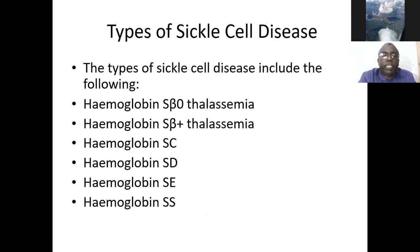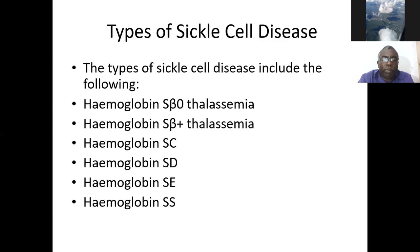The types of sickle cell disease include: hemoglobin S beta-zero thalassemia, hemoglobin S beta-plus thalassemia, hemoglobin SD, hemoglobin SE, and hemoglobin SS. Out of all of these, hemoglobin SS is the most serious one.